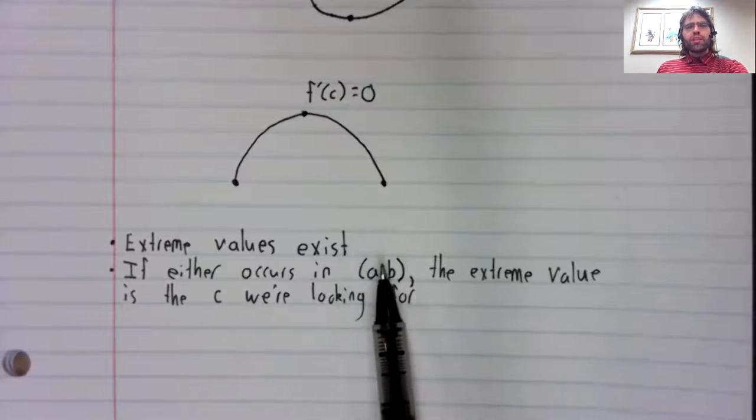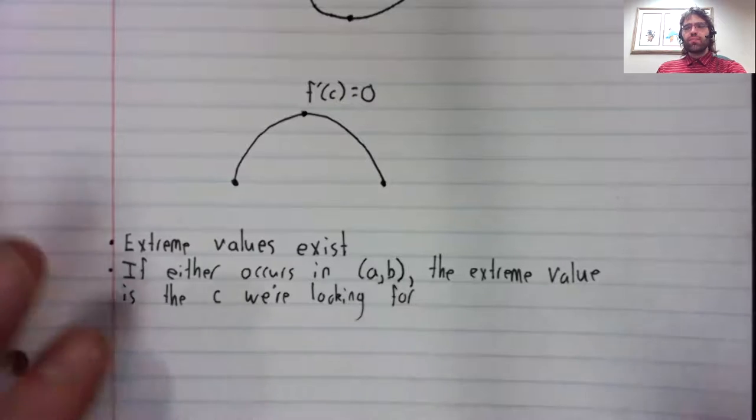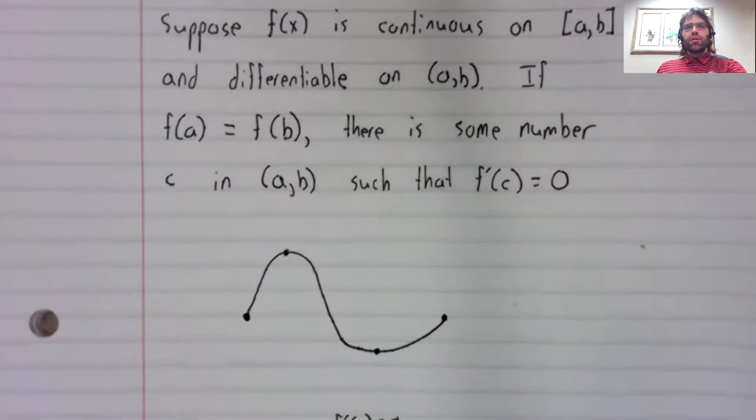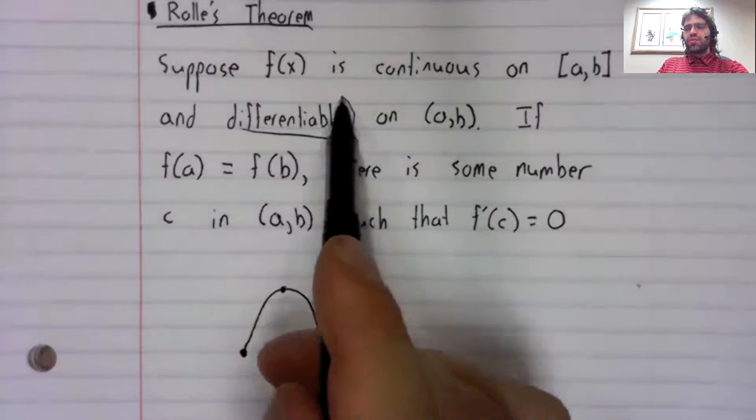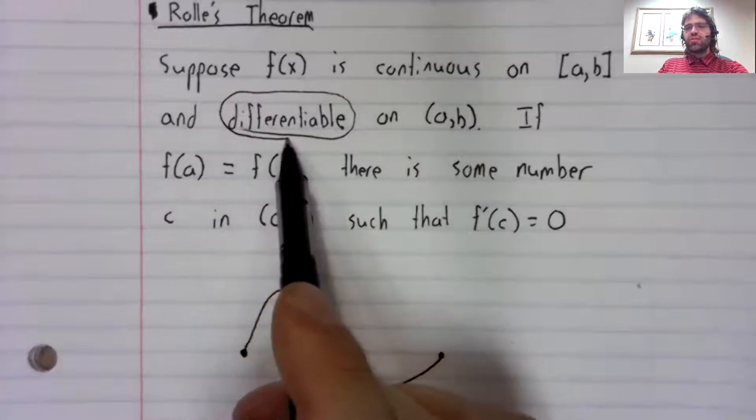Because the extreme value is a critical value. At critical values, the derivative either is zero, or does not exist. But the derivative always exists in this case.